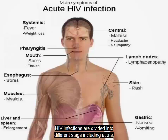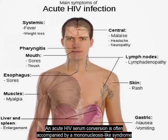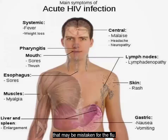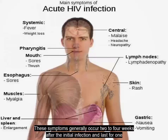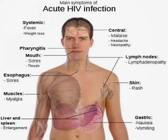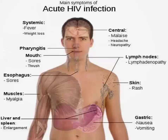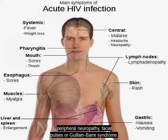HIV infections are divided into different stages, including acute, asymptomatic, symptomatic, and AIDS. In acute HIV, seroconversion is often accompanied by a mononucleosis-like syndrome that may be mistaken for the flu. These symptoms generally occur two to four weeks after the initial infection and last for one to two weeks, although some symptoms may persist for several months. Some people also develop neurological complications such as aseptic meningitis, peripheral neuropathy, facial palsies, or Guillain-Barré syndrome.